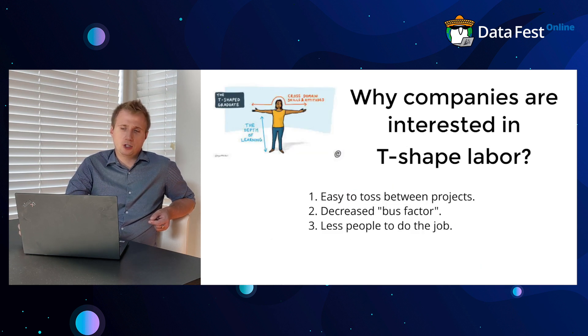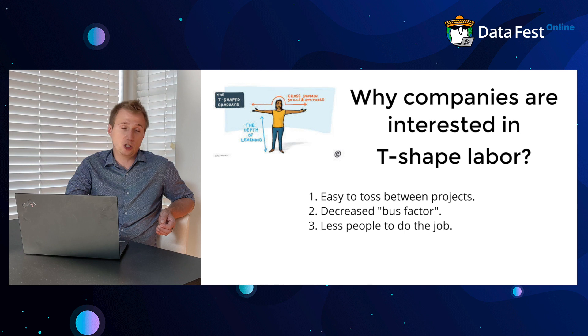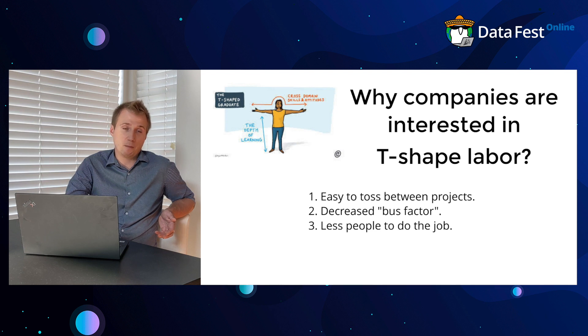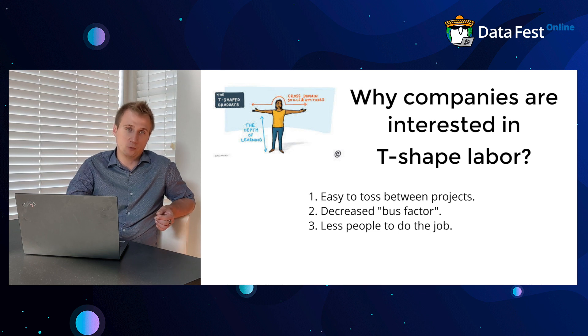Why are companies interested in T-shaped labor? First, it's easy to toss them between projects. Imagine Google closed Google Plus—what to do with all the people involved? They reassign tasks within the organization that may not be related to social networks. This makes companies flexible—they're able to experiment with different projects like Google Plus, Google Wave, Google Glass.